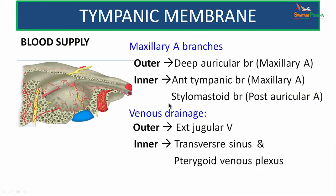The blood supply of the tympanic membrane: the outer part is supplied by the deep auricular branch of the maxillary artery, whereas the inner part is supplied by the anterior tympanic branch of the maxillary artery and the stylomastoid branch of the posterior auricular artery. From the outer aspect, the veins drain into the external jugular vein. From the inner aspect, drainage is into the transverse sinus and pterygoid venous plexus — meaning it drains directly into the middle cranial fossa.